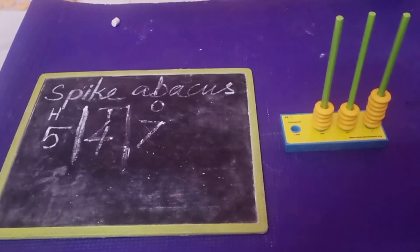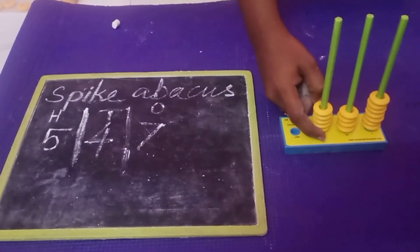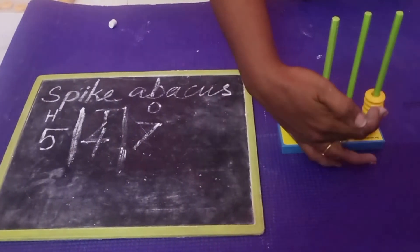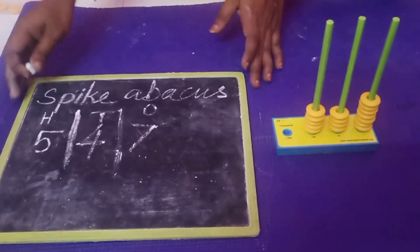So we have 500, 40, and 7 ones. How do we write the expanded form?